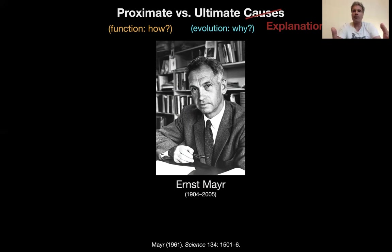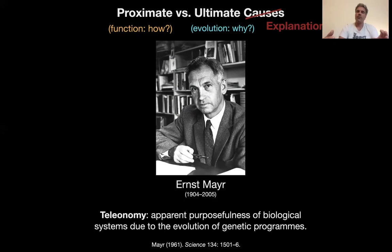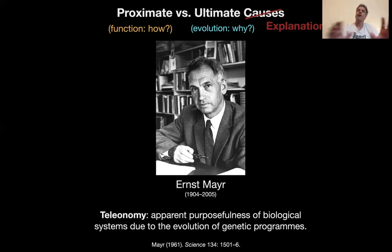This evolutionary "why" is tricky, because traits are for something — they have a function in the evolutionary sense. Wings are for flying. This smacks of teleology. So Mayr, in the same paper, popularizes this concept of teleonomy — which was introduced before by Pittendrigh and others — an apparent purposefulness of biological systems due to the evolution of genetic programs. It's only apparent because there is a deterministic genetic program that is being selected for. If you have a deterministic genetic program and selection, you can get the impression that something has a purpose just because this program has been selected in the past for that particular activity. But it turns out to be not quite as simple.